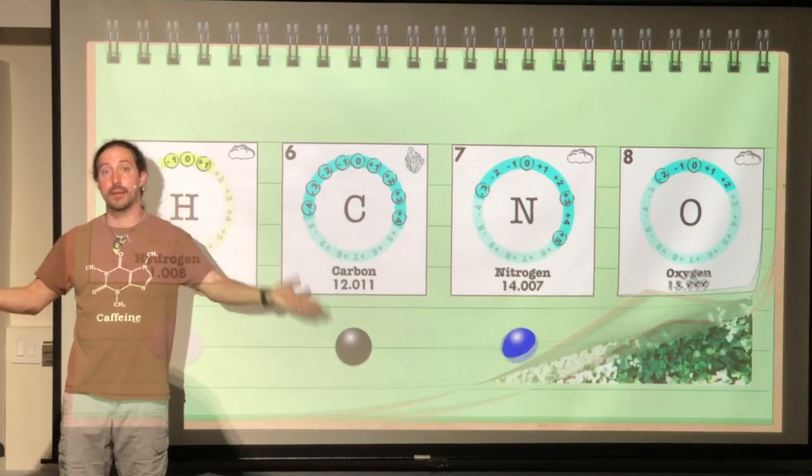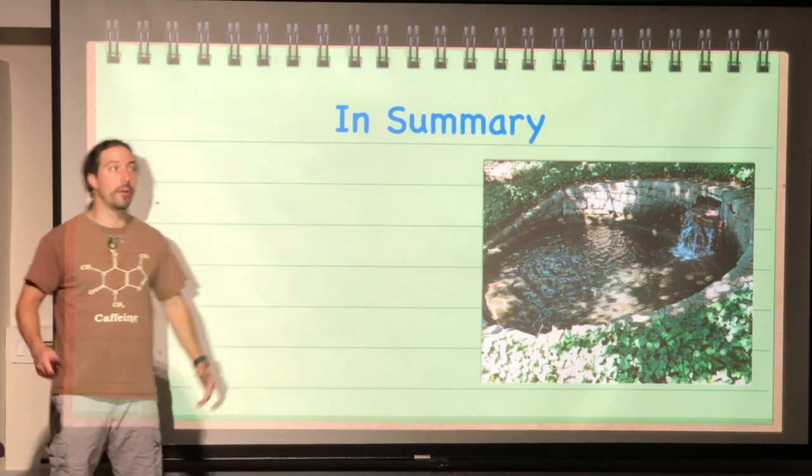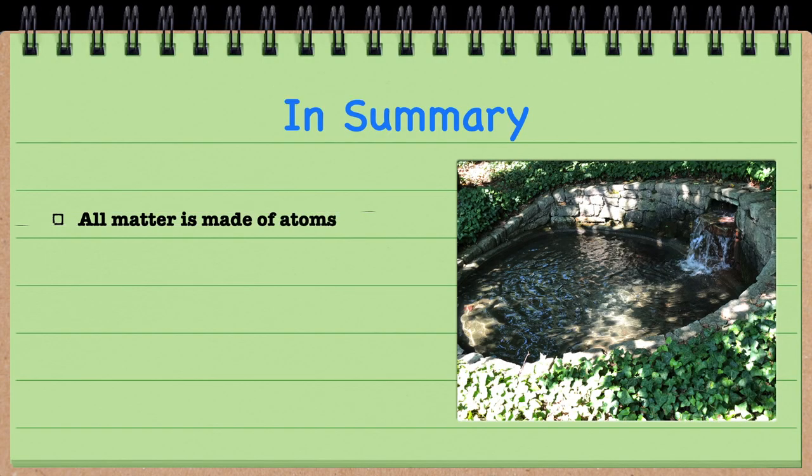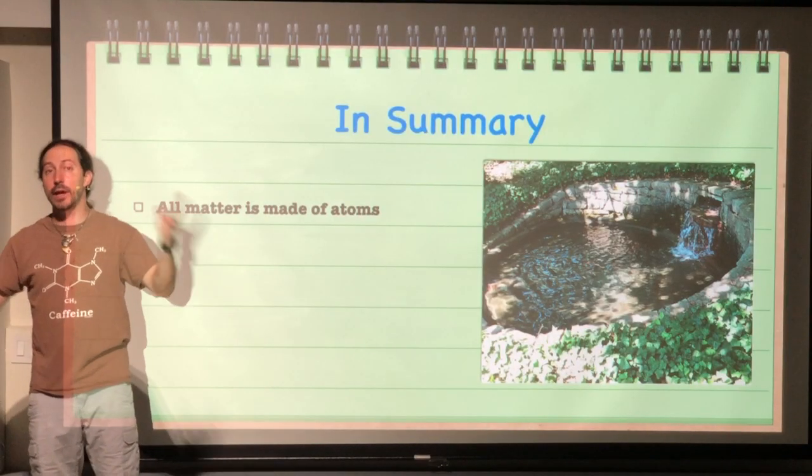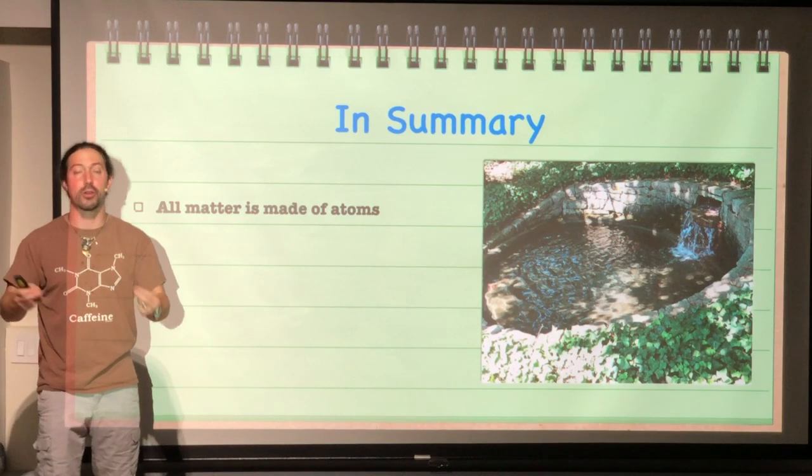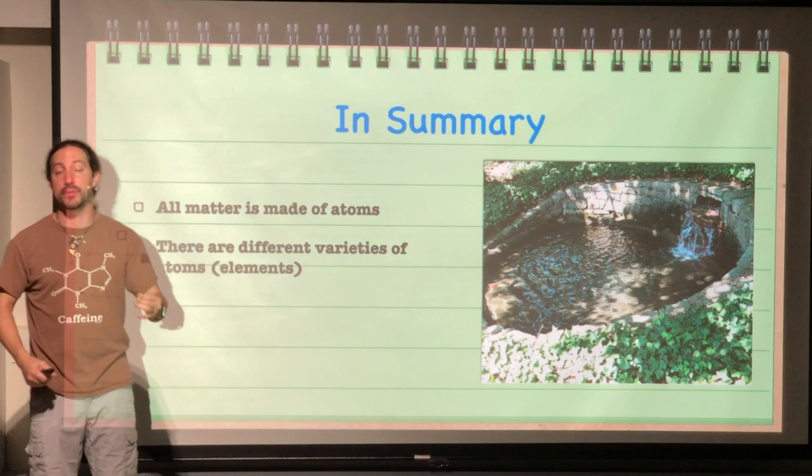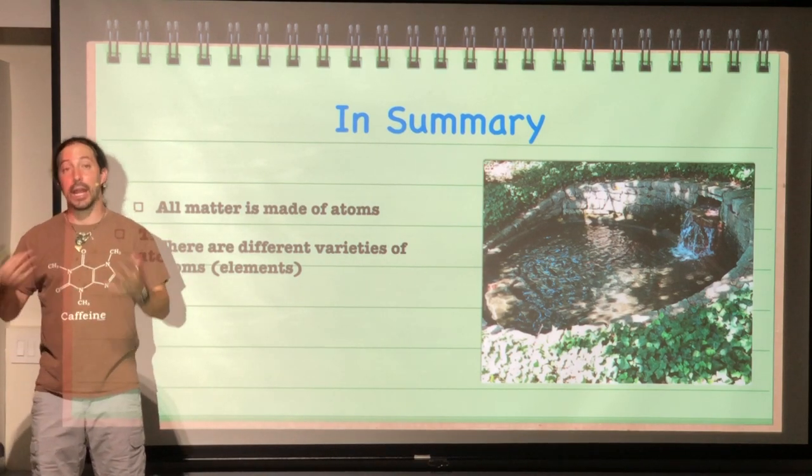That is the beginning of biochemistry. So in summary for today, hopefully you understand that all matter is made of atoms. Stuff around us that we interact with on a daily basis is made of these really tiny particles called atoms. And there are different varieties of those atoms. That's the elements.